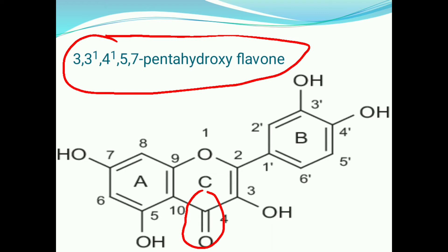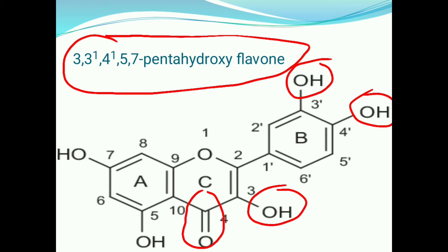This structure also contains five hydroxy groups. These five hydroxy groups are present at the 3, 3', 4', 5, and 7 positions. So this structure is also called as 3,3',4',5,7-pentahydroxyflavone.